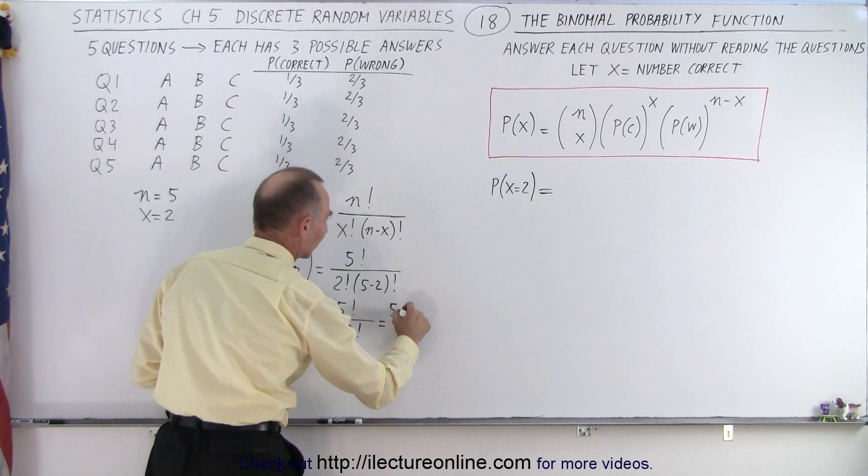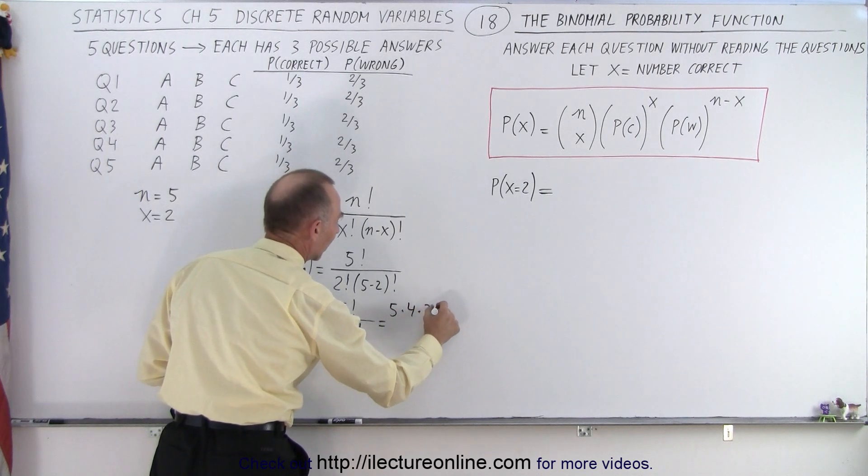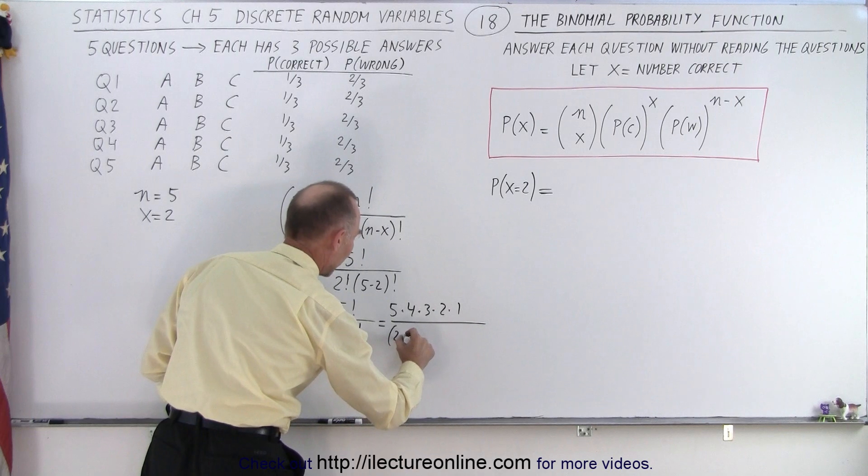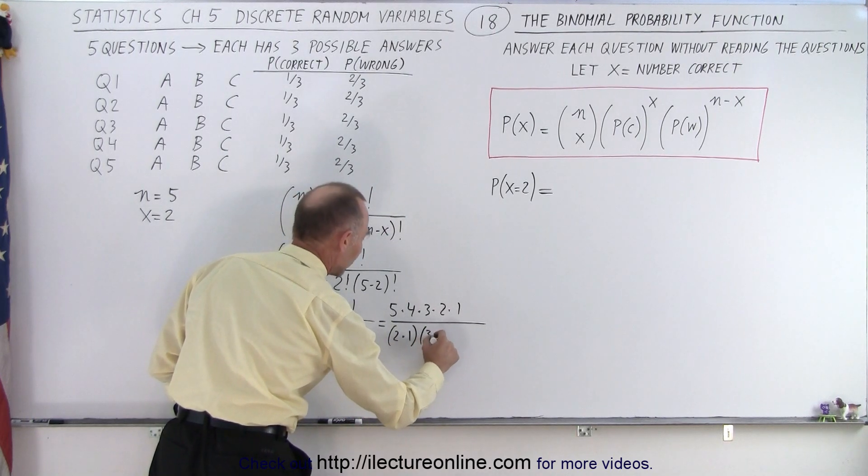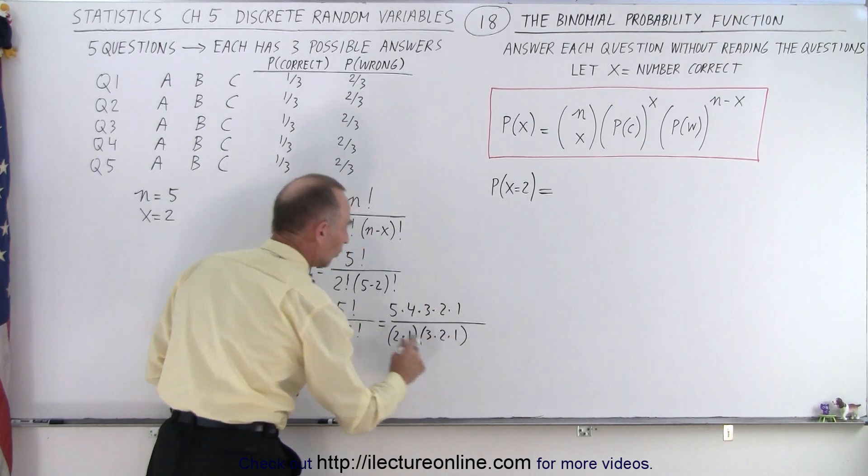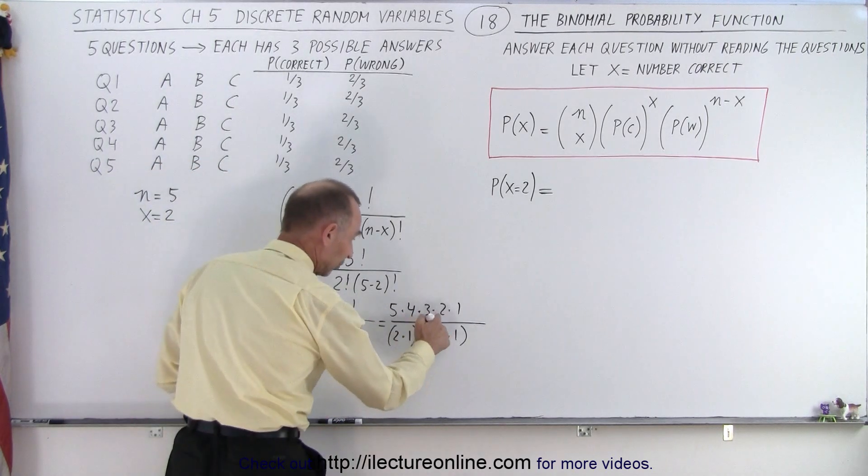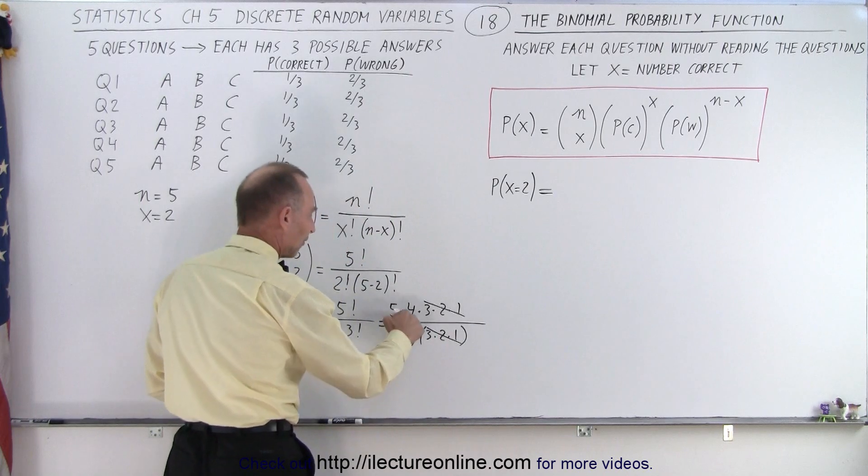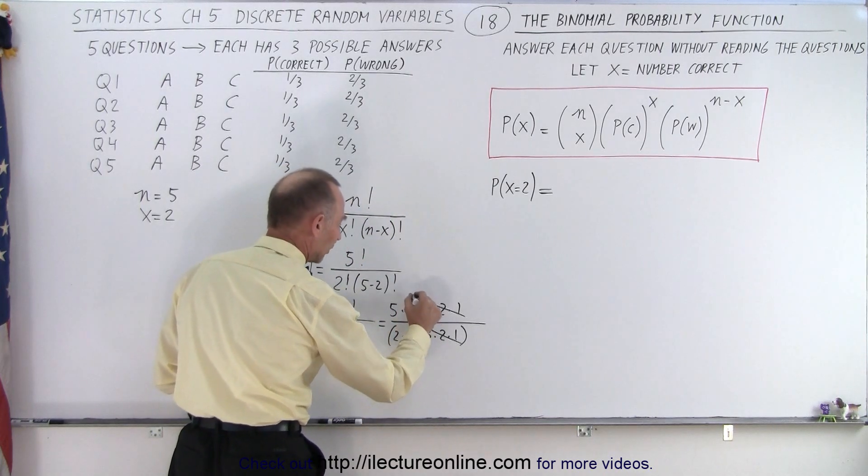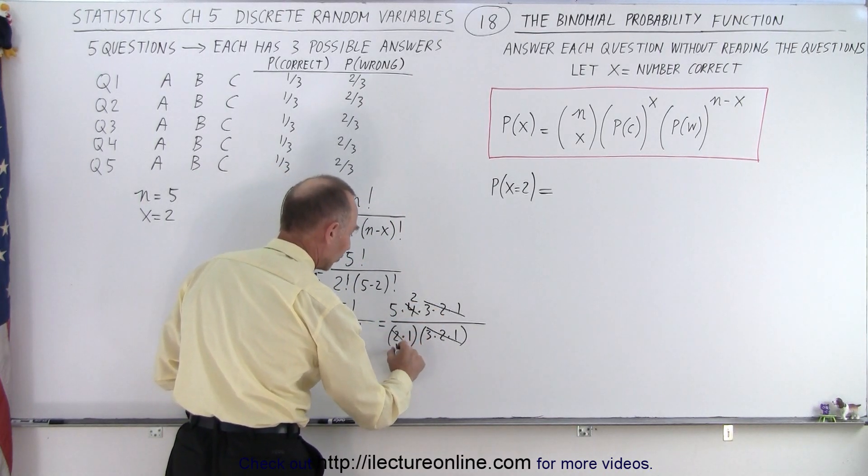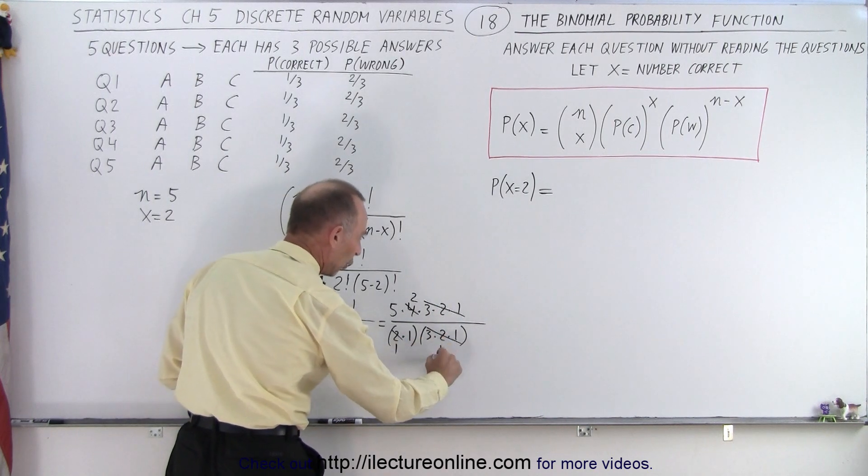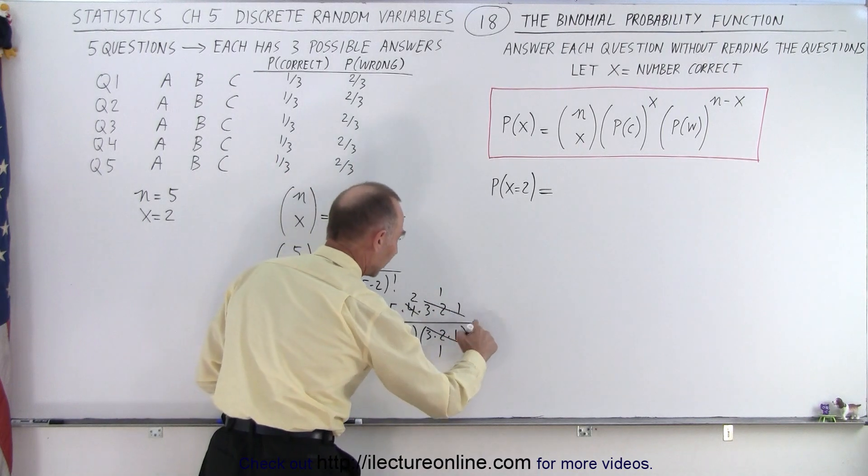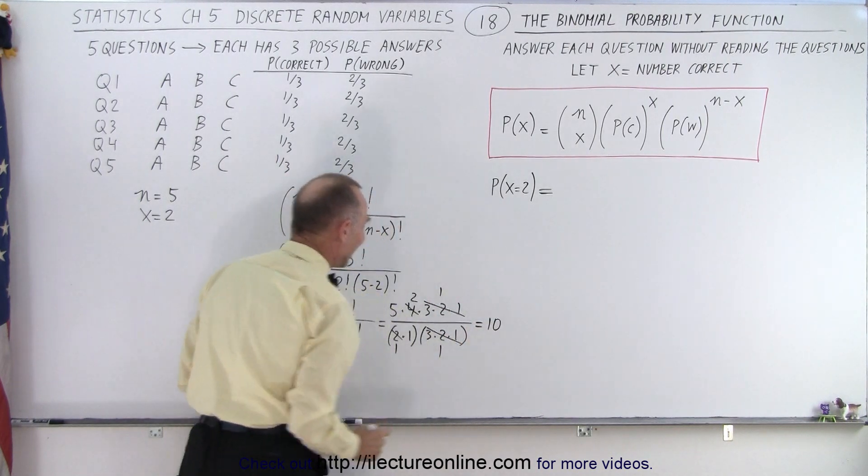Which is equal to five times four times three times two times one, divided by two times one and divided by three times two times one. So how do we simplify that? Well, first of all, we have three times two times one here and three times two times one here. We have a four and a two, so four divided by two is two. Two divided by two is one. Now notice we have all ones in the denominator. We have five times two times one in the numerator. So in this case, this is equal to ten.